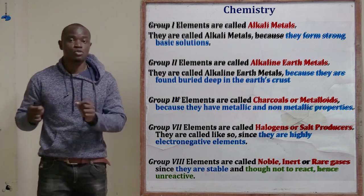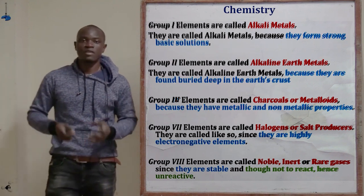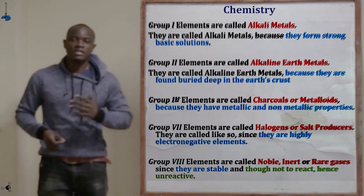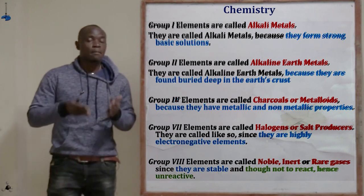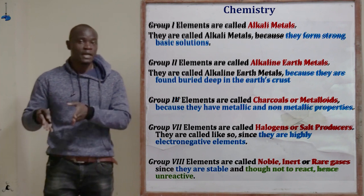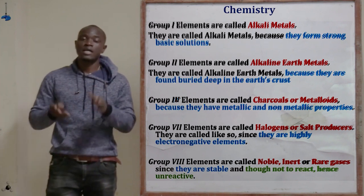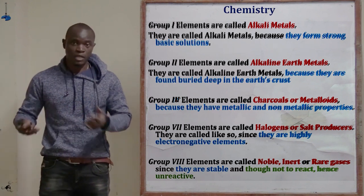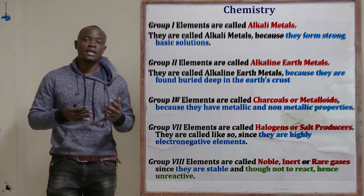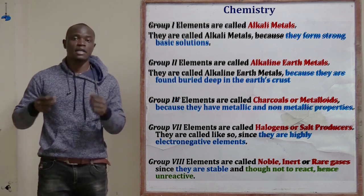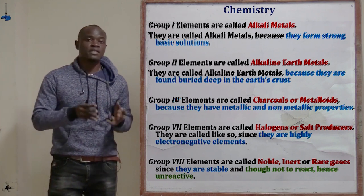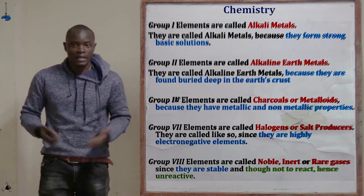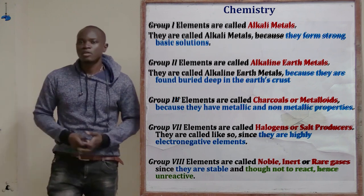We also have element K which is in group number two. Group two elements are referred to as alkaline earth metals — not alkali earth metals. They are called alkaline earth metals because they are found buried deep inside the earth's crust, and that is why the members of group two carry that name.